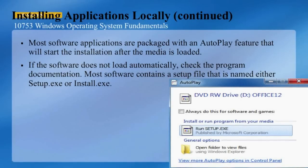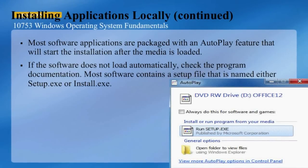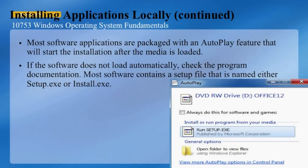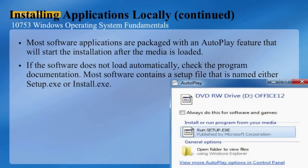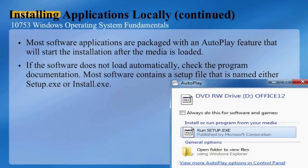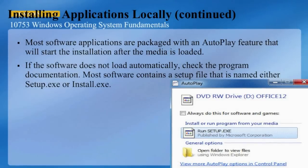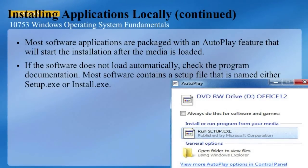Most software contains either a setup.exe file or an install.exe file. If you cannot locate the installation files, review the software documentation, which may be located on the media in a readme.txt file or possibly online at the software developer's website. Here we see a screenshot of the autoplay or auto-run feature that's starting a setup program for Office.